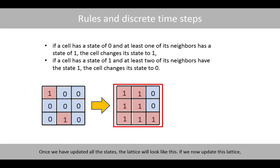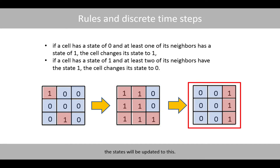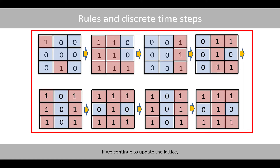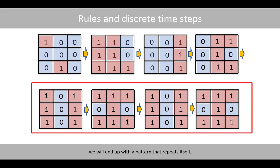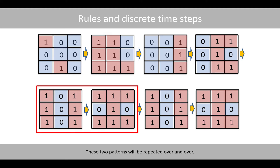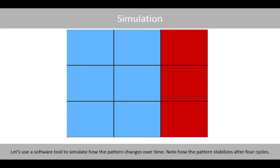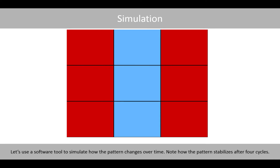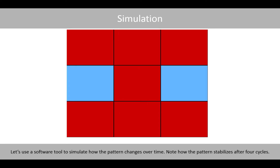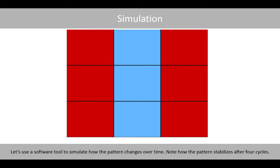Once we have updated all the states, the lattice will look like this. If we now update this lattice, the states will be updated to this. If we continue to update the lattice, we will end up with a pattern that repeats itself. These two patterns will be repeated over and over. Let's use the software tool to simulate how the pattern changes over time. Note how the pattern stabilizes after four cycles.